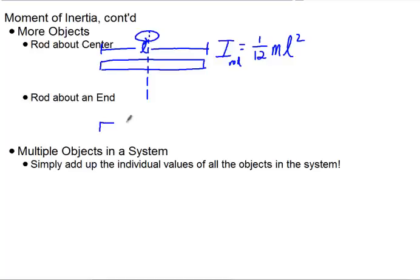However, if we take the same rod and rotate it about its end, you can feel this, the axis of rotation on this end, the I value for the rod about its end is one-third ml squared. Remember, one-third is greater than one-twelfth. Think about how the mass is distributed when it's rotated about its center compared about its end.